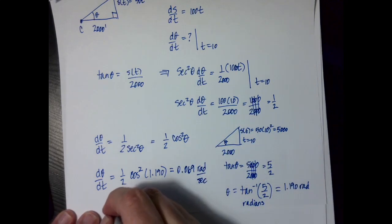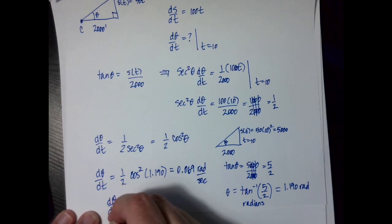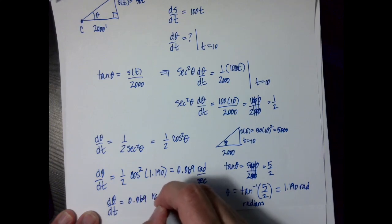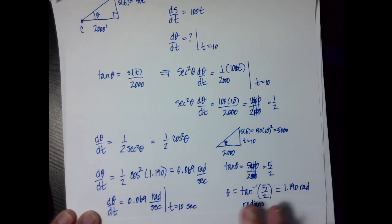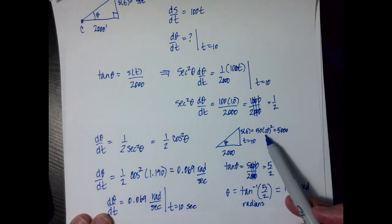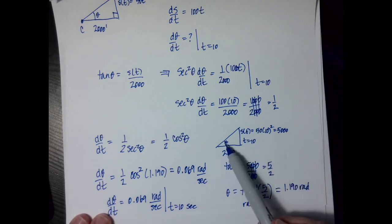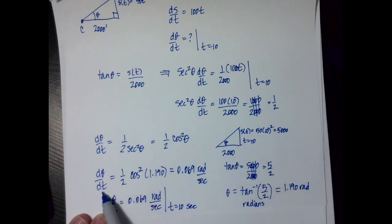And so when I report, I say d theta over dt equals 0.069 radians per second when time equals 10 seconds. So this one had its own unique caveat in that I had to go back to the original position function to be able to come up with a measure for theta so that I could find my d theta dt.